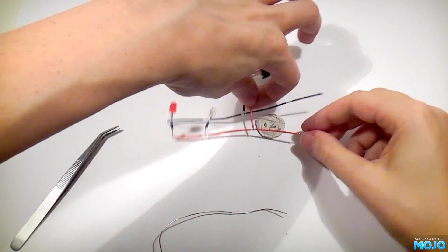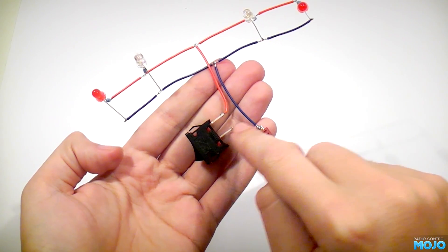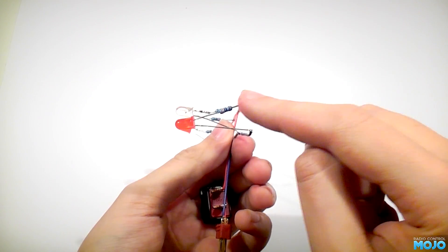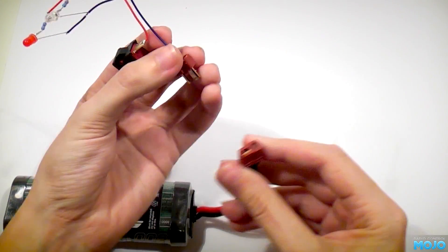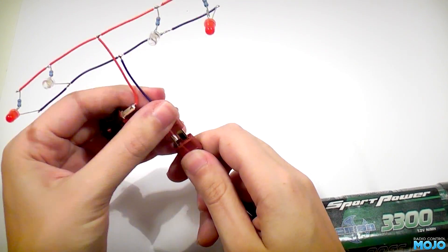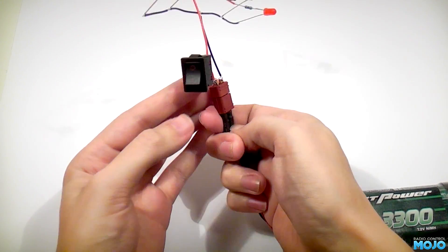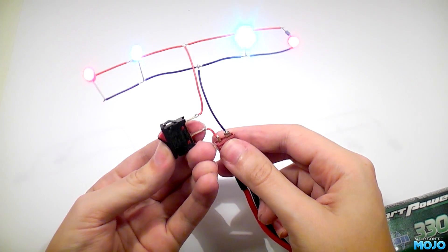If you follow the wires, you can see it's exactly the same as the diagrams. Positive, switch, resistor, LED and negative. The only other thing you'll need to consider is insulation for the bare joints. Heat shrink is ideal for this. Now, as they say, let there be light.